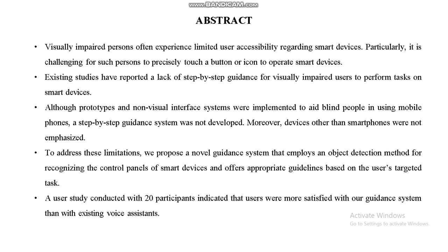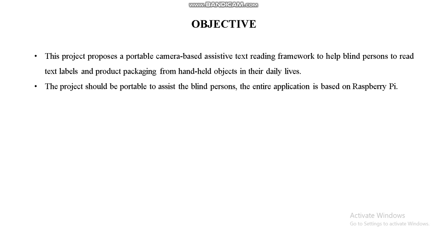A user study conducted with 20 participants indicated that users were more satisfied with our guidance system than with existing voice assistants. Our main objective is a camera-based assistive text reading framework to help blind persons read text labels and product packaging from hand-held objects in daily life. The project will be portable to assist blind persons, and the entire application is based on Raspberry Pi.